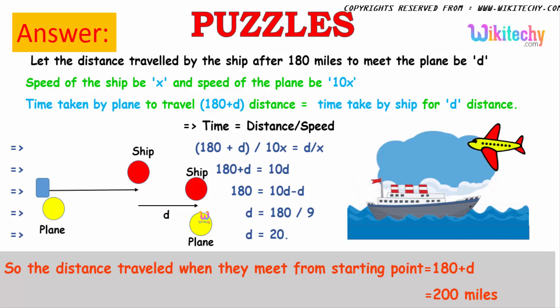So the distance is 20. So 180 plus 20, from the seashore it will be almost at 200 miles.